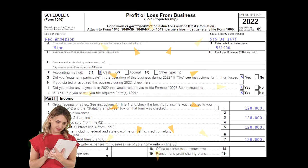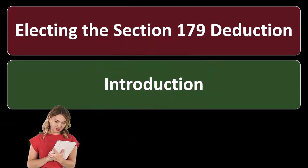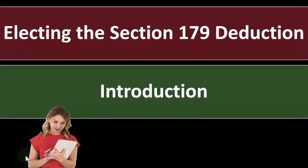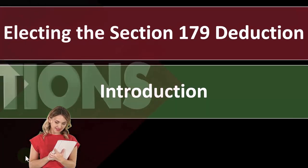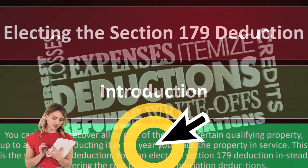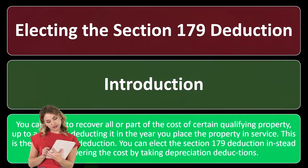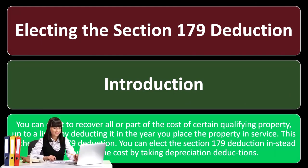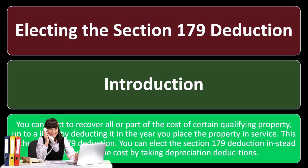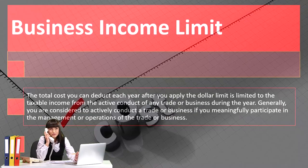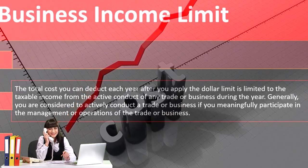We might have a special deduction as well as special depreciation, which we'll talk about in future presentations. All right, focusing once again on the Section 179 deduction — as a recap, electing the Section 179 deduction: you can elect to recover all or part of the cost of certain qualifying property, up to a limit, by deducting it in the year you place the property in service. This is the Section 179 deduction. You can elect it instead of recovering the cost by taking a regular depreciation deduction, which would be a benefit if we can get it in the current year.